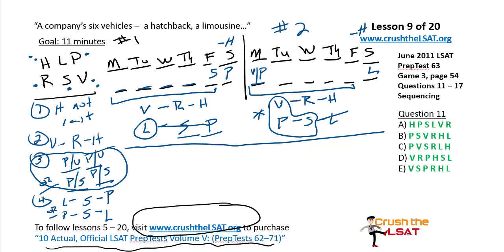Question one, acceptable order. Take the first rule and see what choices we can eliminate, then the second, and so on. Rule one: H cannot go on Saturday — that eliminates answer C. Rule two eliminates A. Rule three eliminates D. Rule four eliminates E. Answer B.